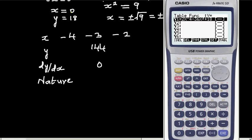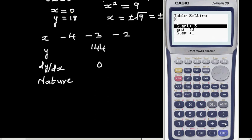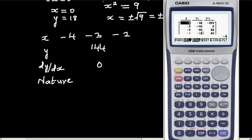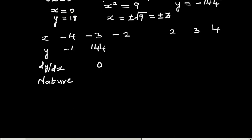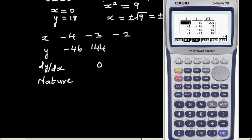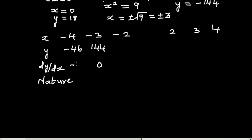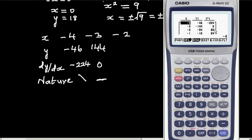Let's go back to the table and execute. Let's go from minus 4 to plus 4. So at minus 4 you got minus 46, and what's the gradient? It's minus 224. So the gradient is negative.